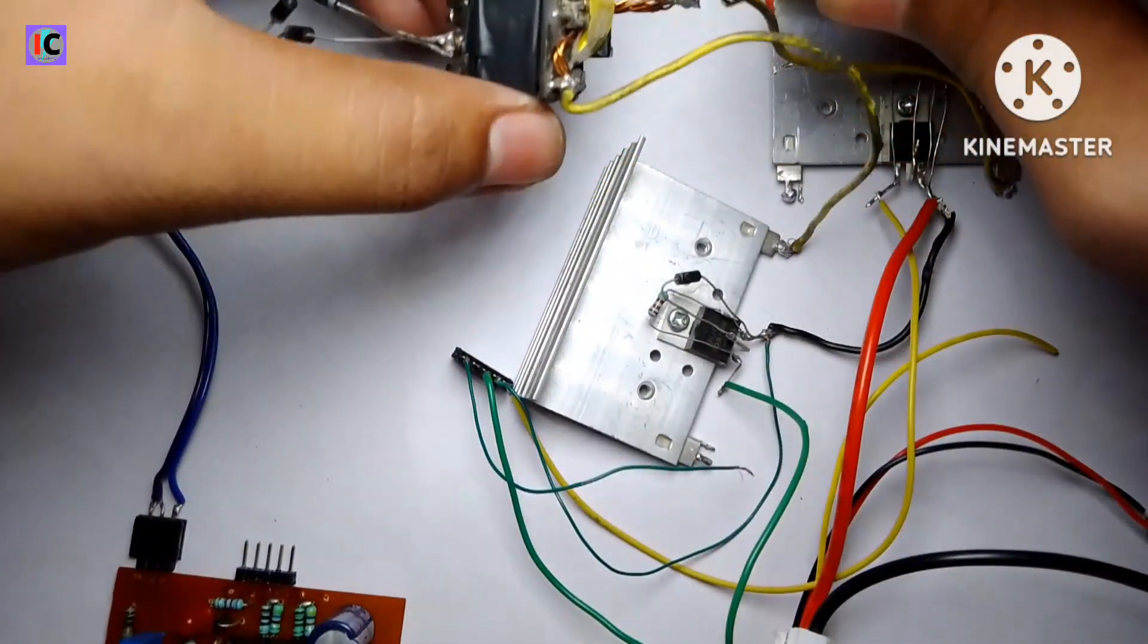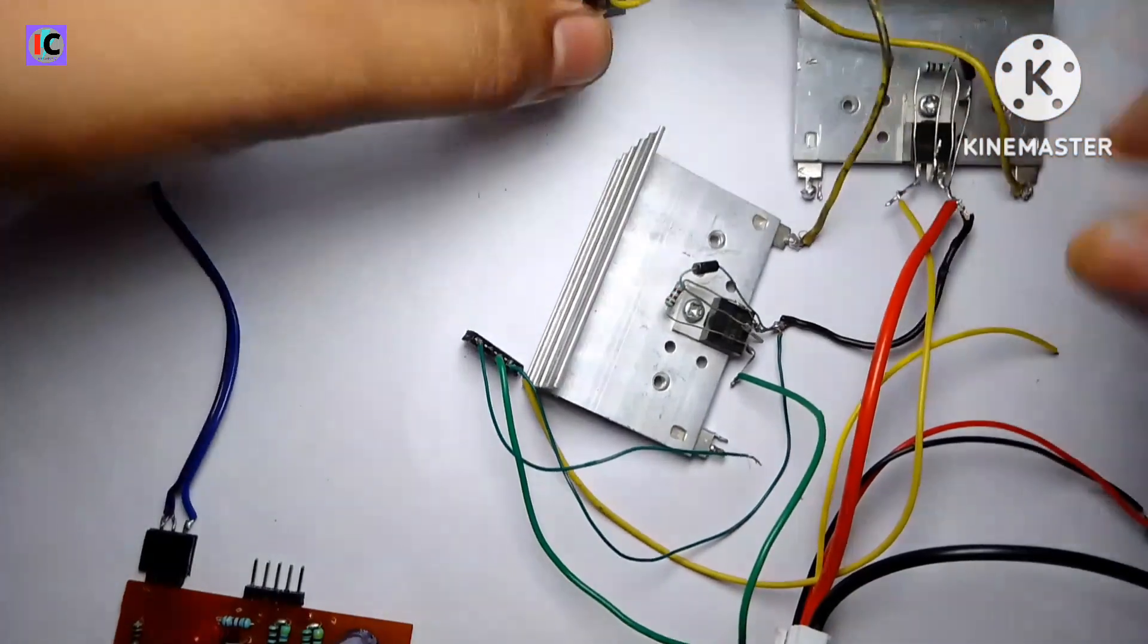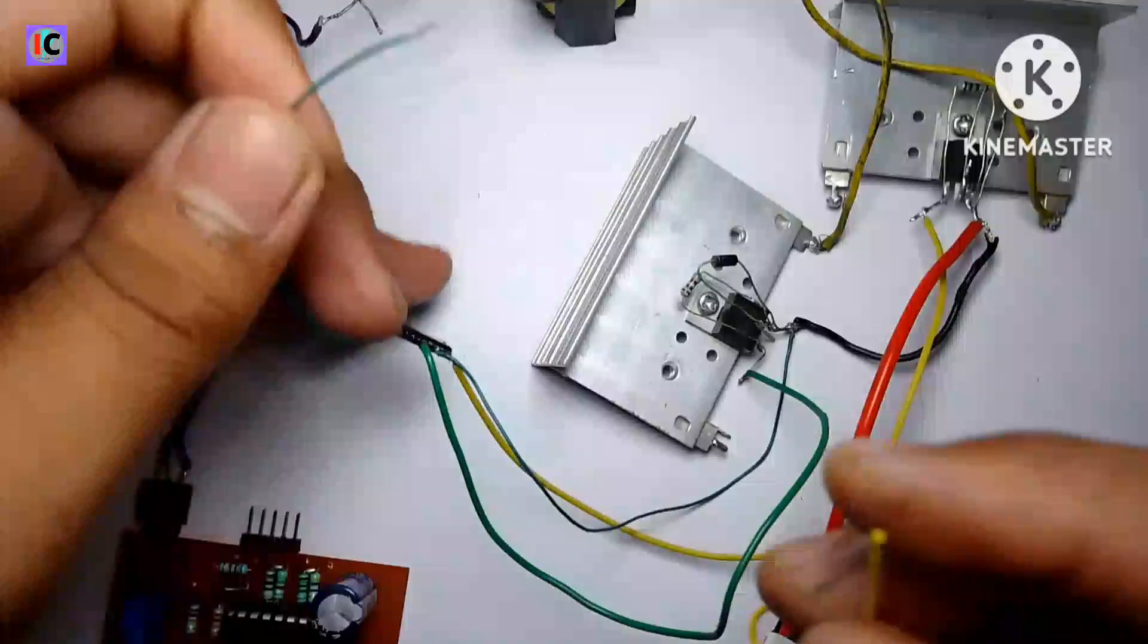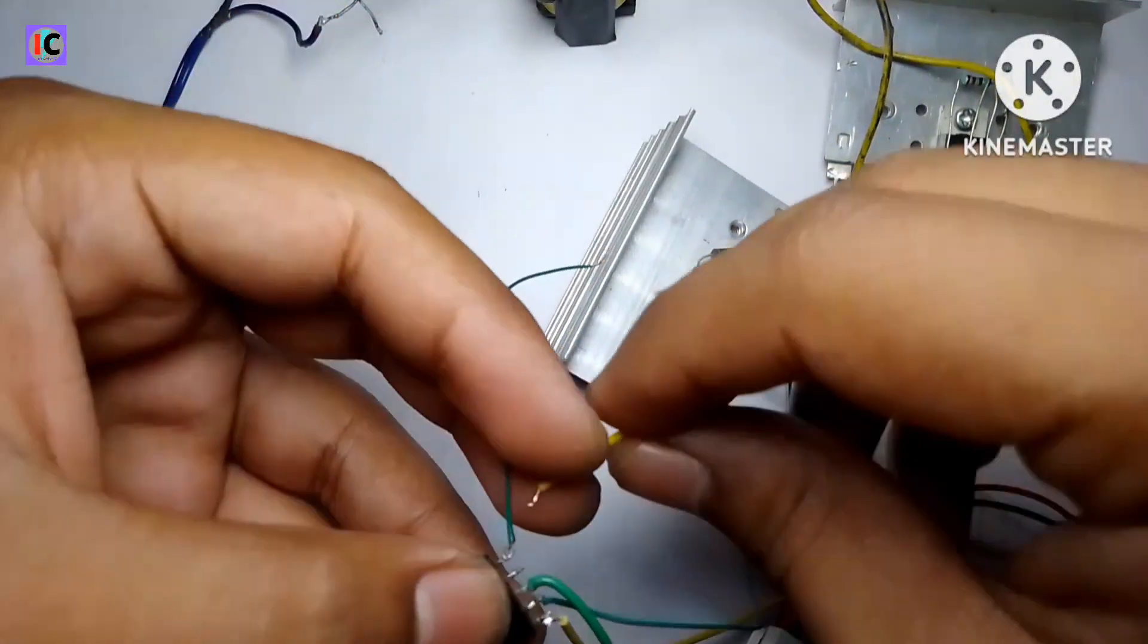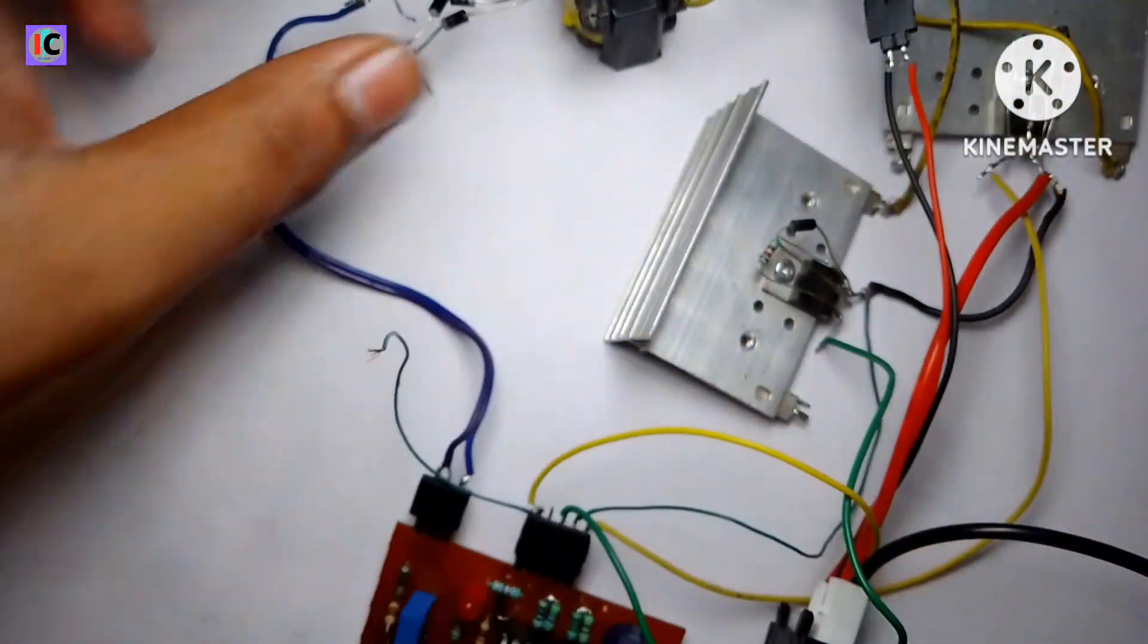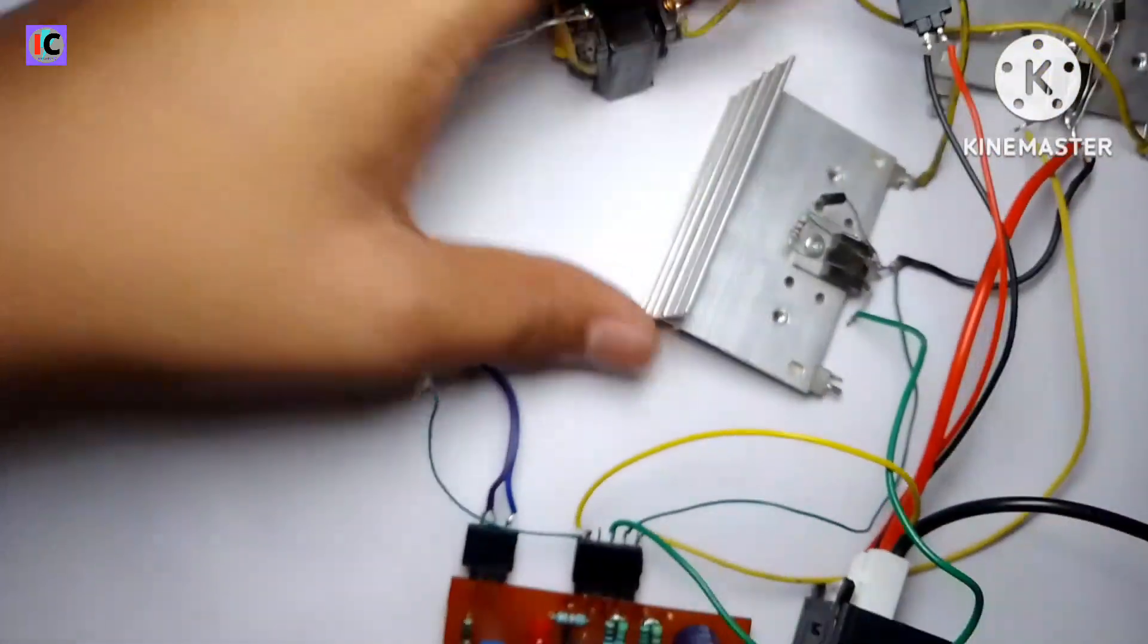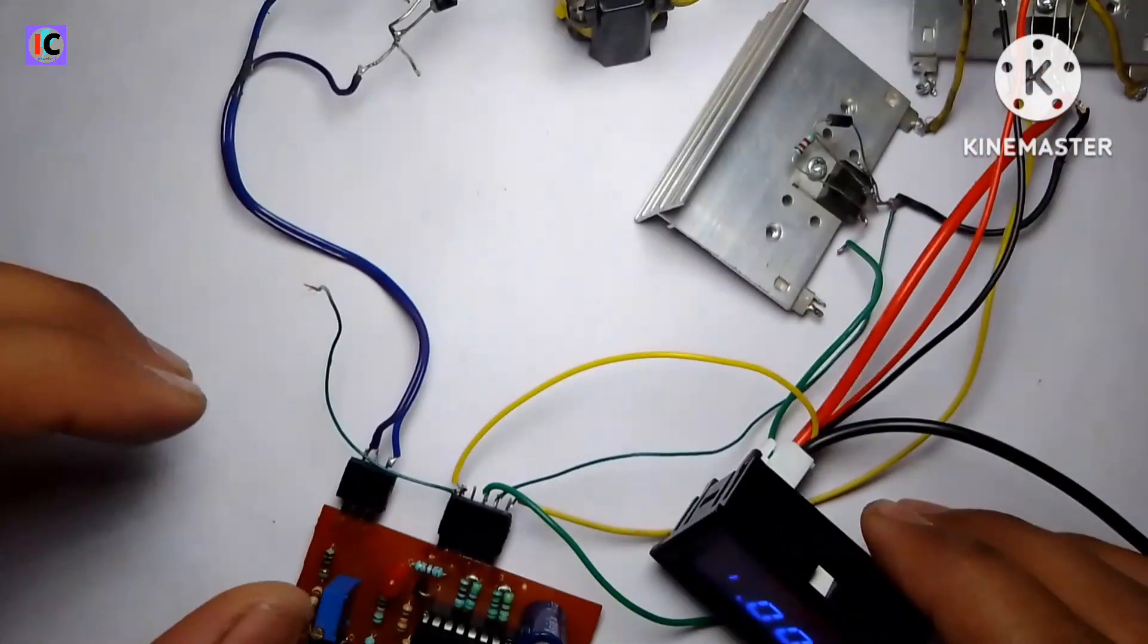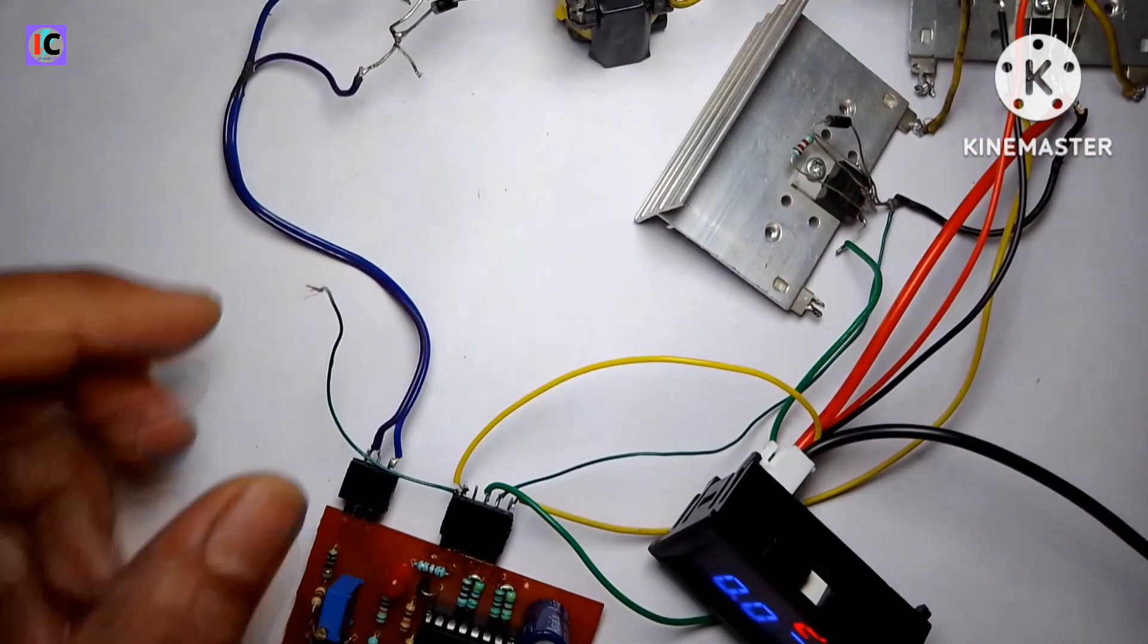Connect to this transformer central tap and also connect the 12 volt wire. The circuit is done and I turn on my power supply.